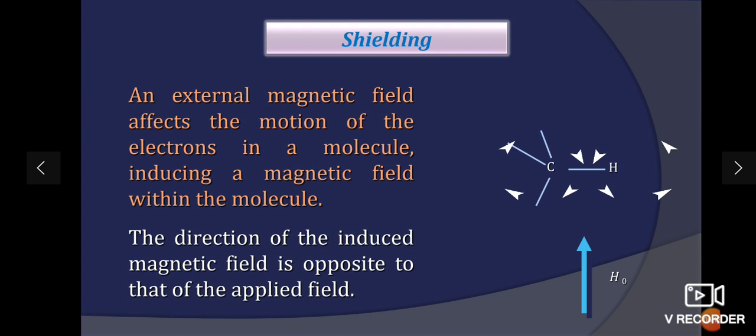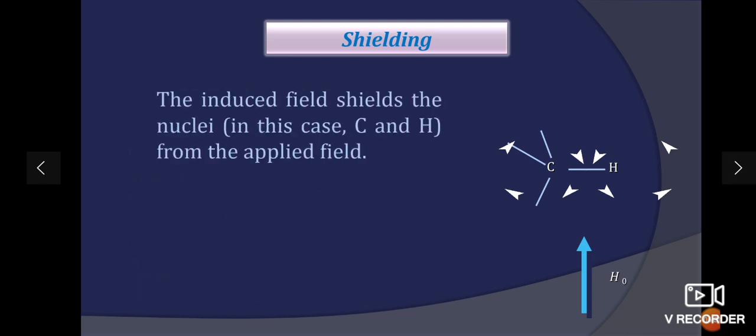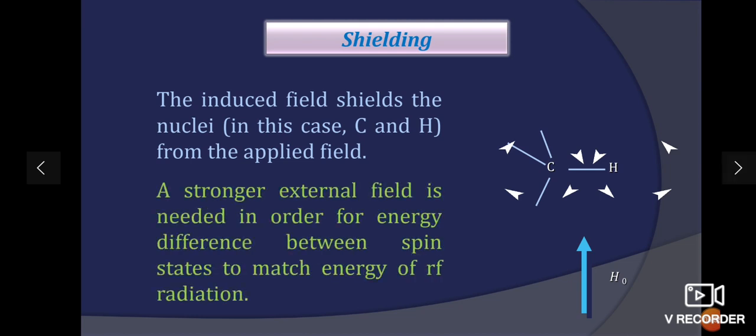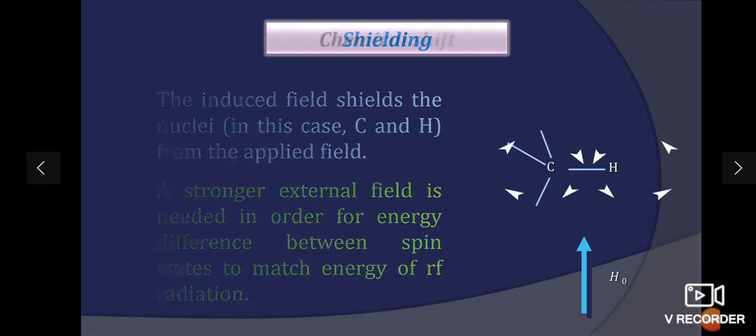What is shielding? An external magnetic field affects the motion of the electrons in a molecule inducing a magnetic field within a molecule. The direction of induced magnetic field is opposite to that of the applied magnetic field. The induced magnetic field shields the nuclei from the applied magnetic field. A stronger external field is needed for energy difference between spin states to match energy of radio frequency radiation.